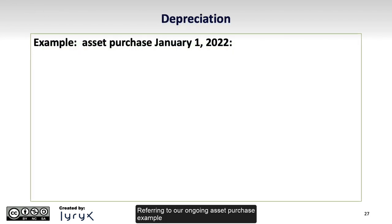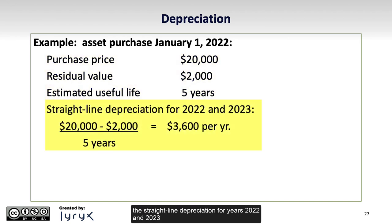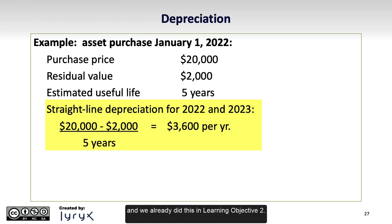Referring to our ongoing asset purchase example, with a purchase price of $20,000, a residual value of $2,000, and an estimated useful life of 5 years, the straight-line depreciation for years 2022 and 2023 would be $3,600 per year, calculated as the $20,000 cost less the $2,000 residual value, divided by 5 years — and we already did this in Learning Objective 2.